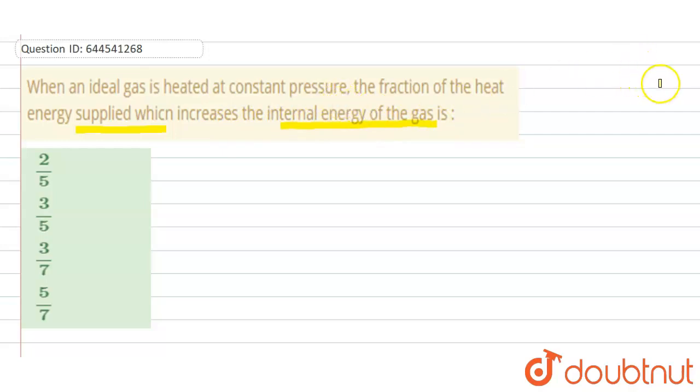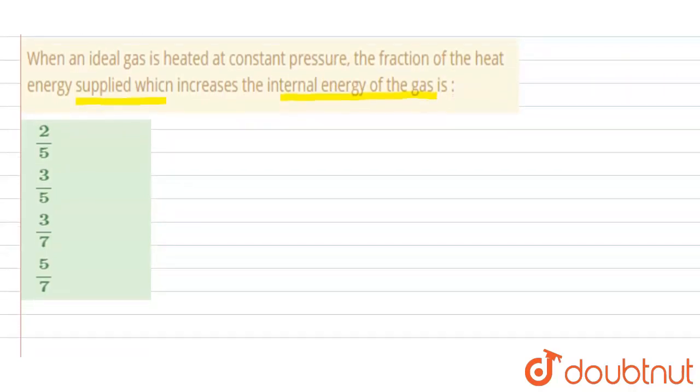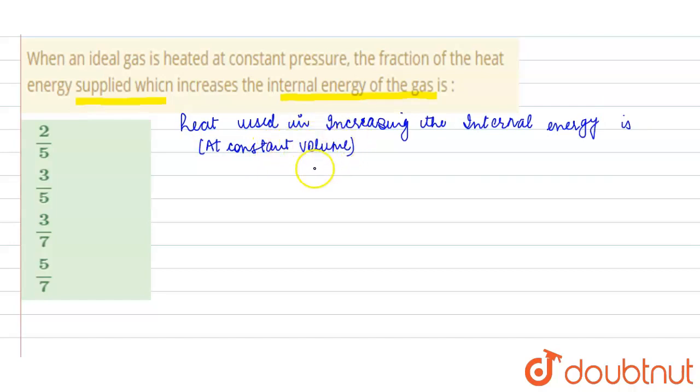So first of all, see the gas is ideal, right? So see how we will solve this question. Heat used in increasing the internal energy is given by, at constant volume, Q1 equals Cv dT.